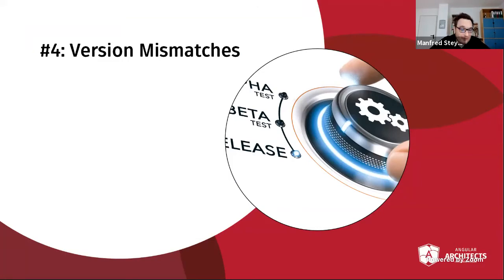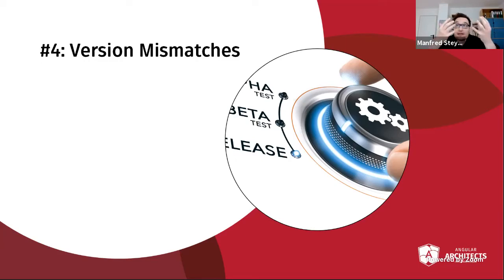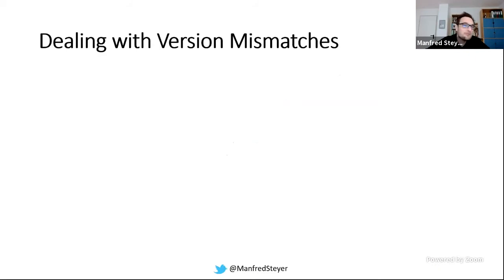I've prepared a fourth topic, and we are really good on time. Let's talk about version mismatches. Just imagine you're sharing a library between micro front-end 1 and the shell, but both need a different version of that library. When this situation arises, Webpack Module Federation is very smart — it has a smart default based on semantic versioning, trying to negotiate the highest compatible version.